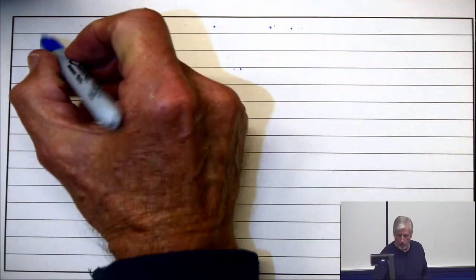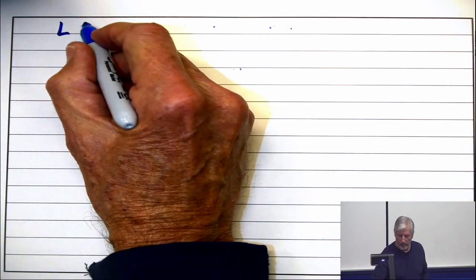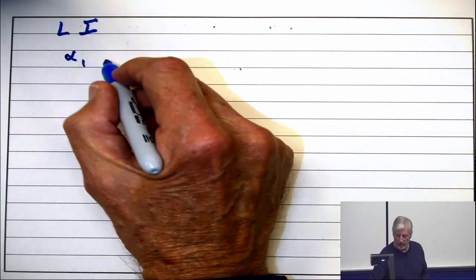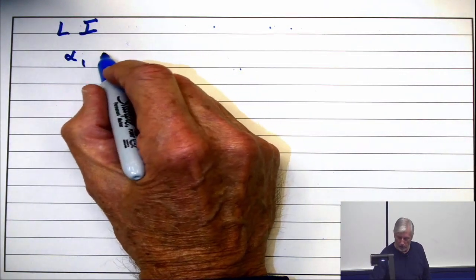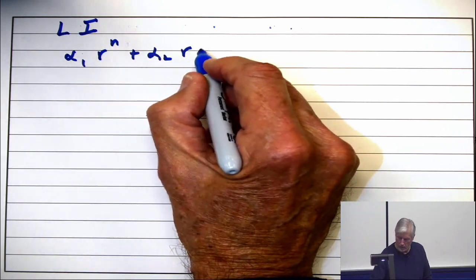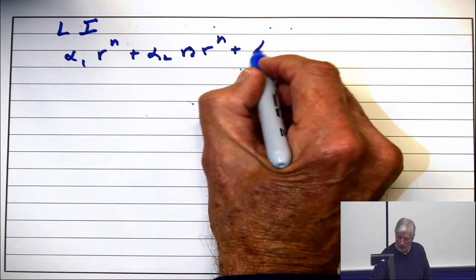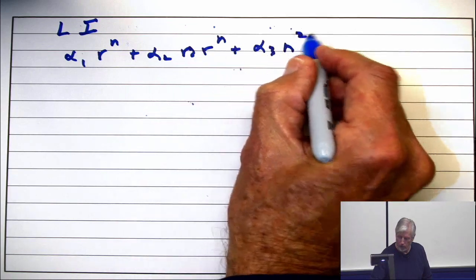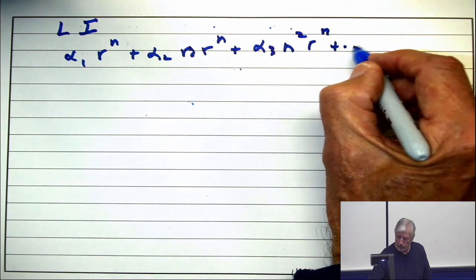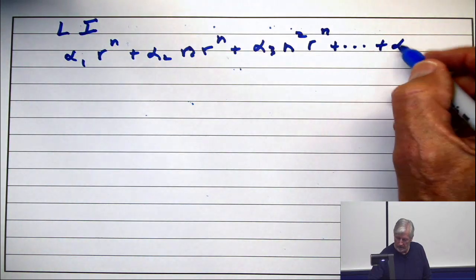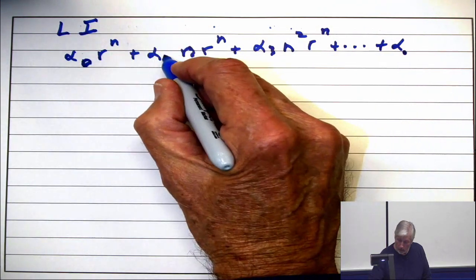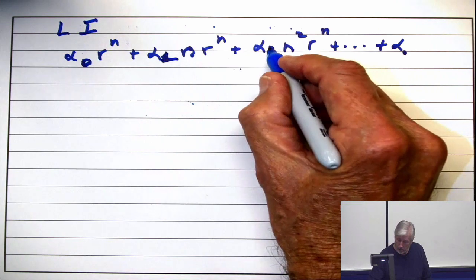So all we need to do is worry about linear independence. Suppose you have a linear combination: n r to the n plus alpha 3n squared r to the n plus out to some alpha. Let's make this one 0, 1, 2.